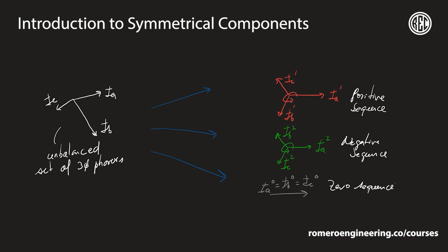This decomposition applies to both currents and voltages — for example, VA1, VB1, and VC1 for the positive sequence voltages. One important point: when dealing with symmetrical components, the voltages are always phase-to-neutral, not phase-to-phase. In power systems we're typically given phase-to-phase voltages, but symmetrical components always uses phase-to-neutral voltages.